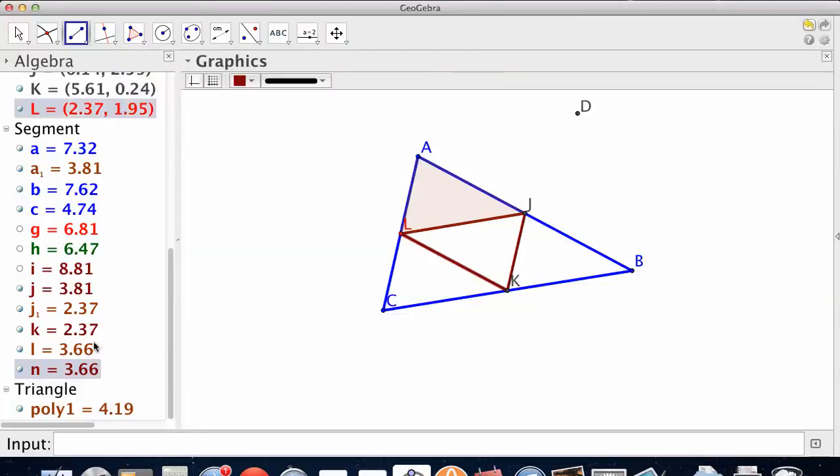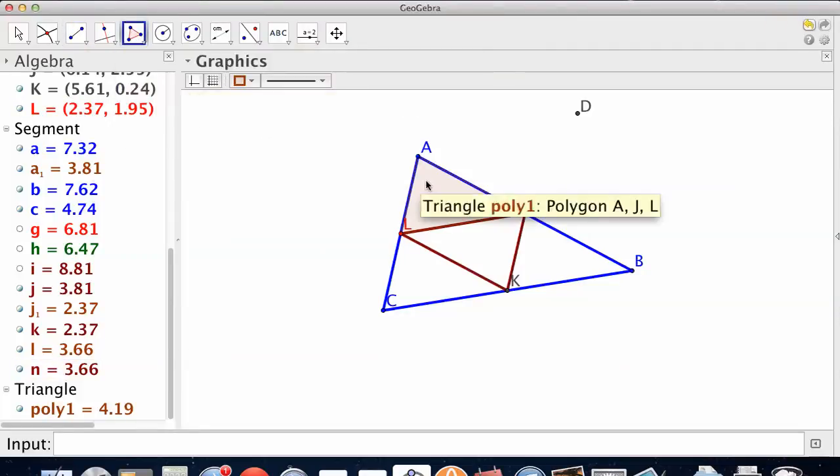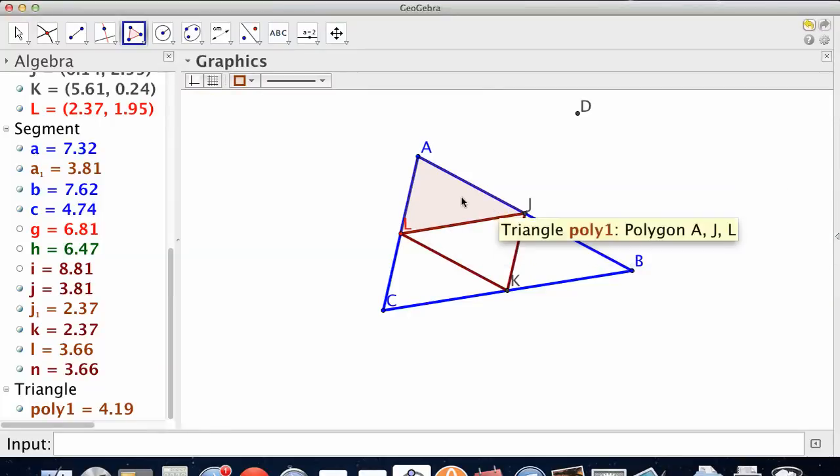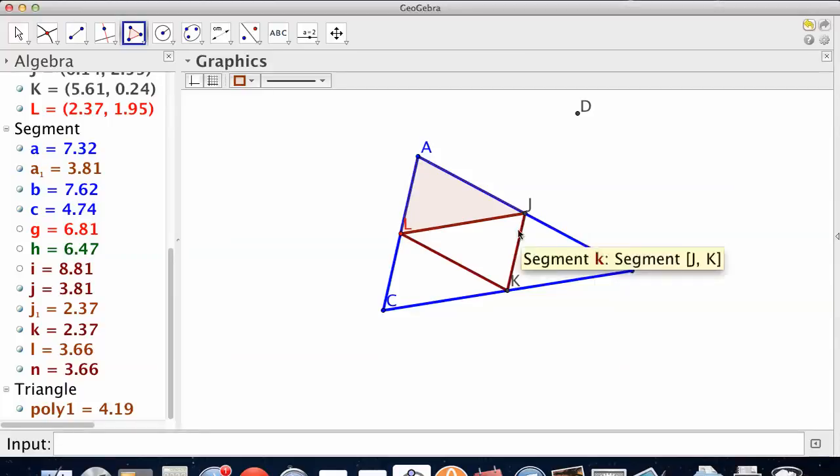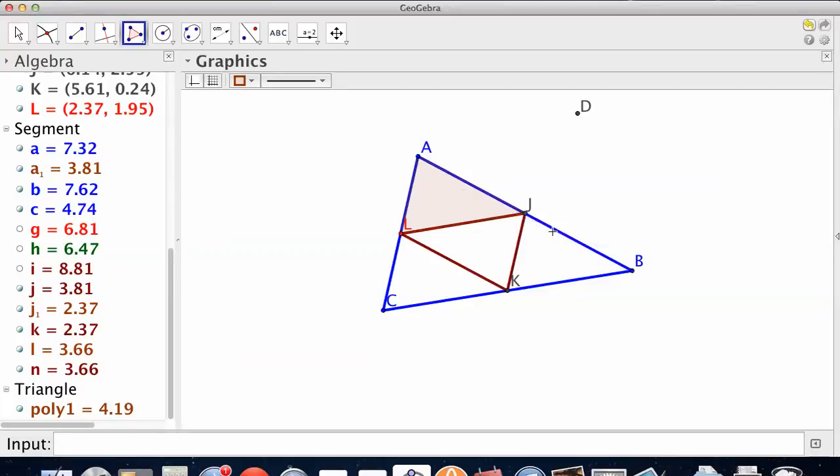Now, the question is, I wonder if those are the same size or... I know AJL is similar to ABC, but is it also similar to BJK? Well, angle B is the same as J. And it's half and half. Things like that. So let's just see if the triangles are the same size.